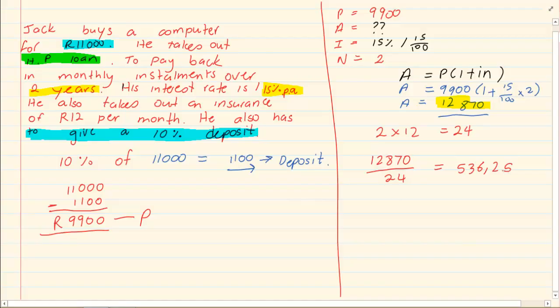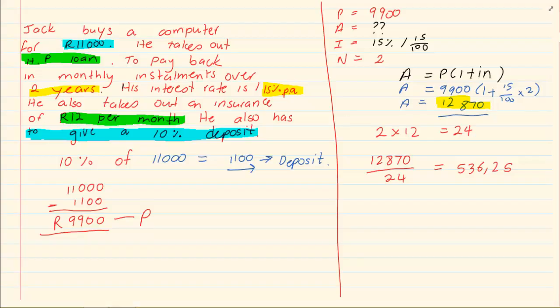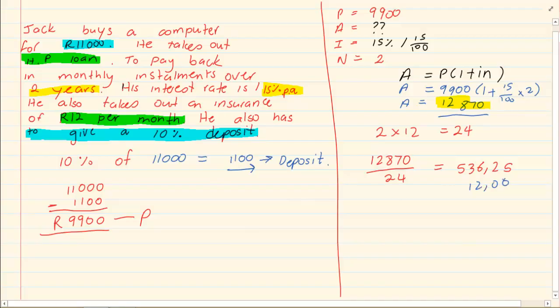Which gives us 536 Rand 25 cents. But don't forget he then pays a monthly insurance of 12 Rand, which means on top of this amount I have to add 12 Rand.